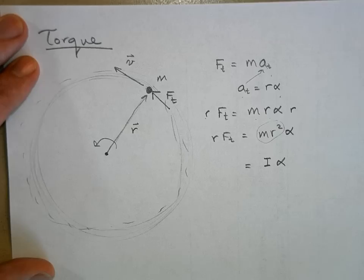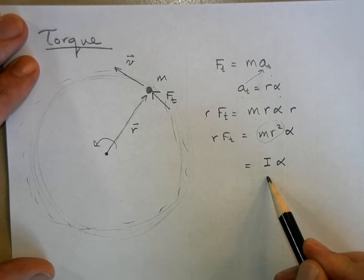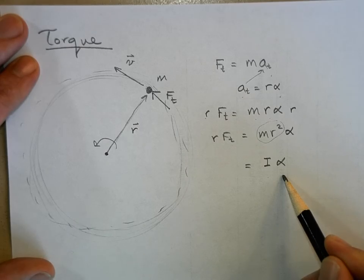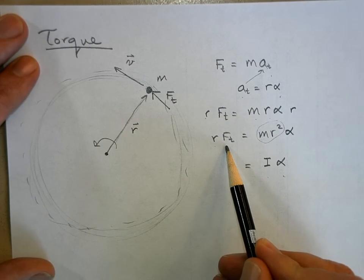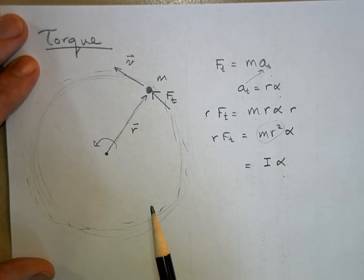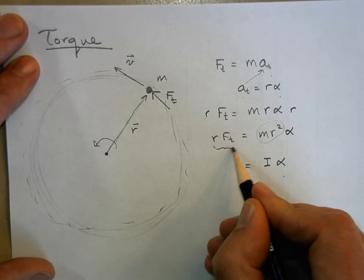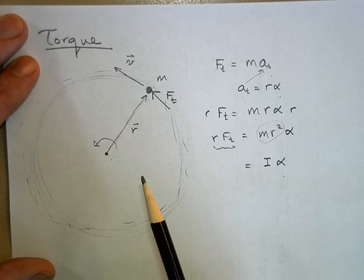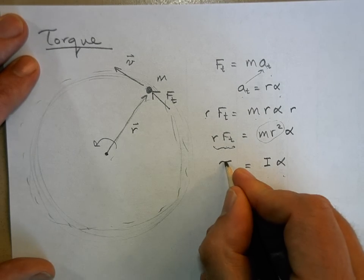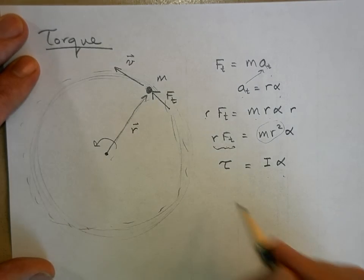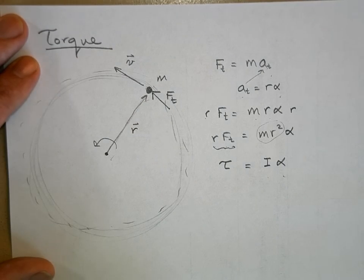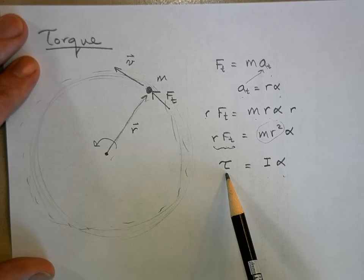I is the rotational equivalent of mass; alpha is the rotational equivalent of acceleration. So r times the tangential force is the rotational equivalent of force — and we have a special variable for r times the tangential force. It's called tau — it's a Greek letter, like a little cursive capital T.